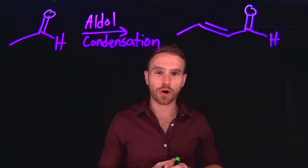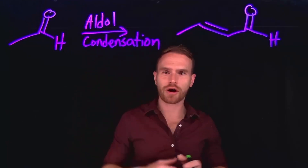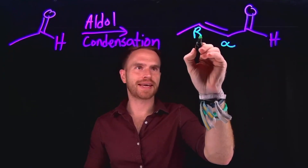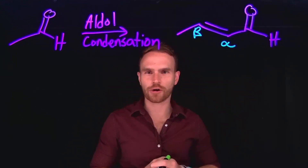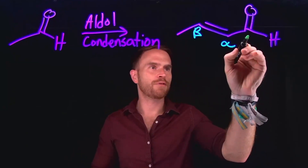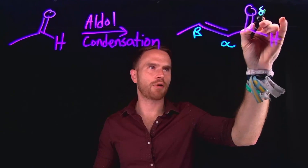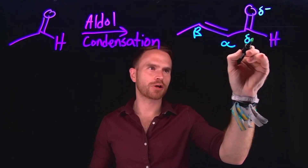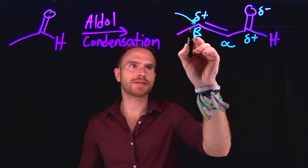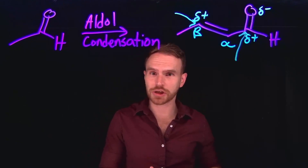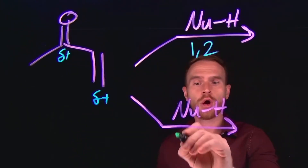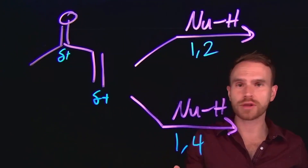Now let's move on to talking about conjugate additions, which are also known as Michael additions. Recall from the previous video, an aldol condensation allows us to make an alpha beta unsaturated carbonyl compound. Alpha beta indicates the location of the alkene in an alpha beta unsaturated carbonyl compound. What you should be able to discern about these compounds is that there are multiple nucleophilic and electrophilic positions. We know that the oxygen being more electronegative is going to be partially negative, whereas the carbonyl carbon is going to be partially positive. That makes the alpha position partially negative and the beta position also partially positive. That gives us two different sites which are relatively electrophilic, so those additions can occur at either of those positions — called 1,2 addition or 1,4 addition, depending on which carbon the nucleophile is attacking.